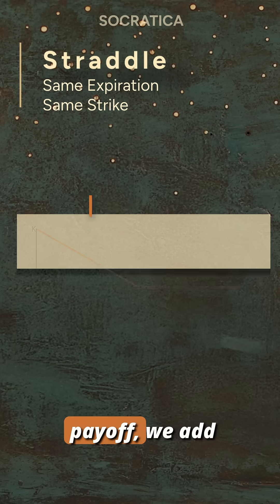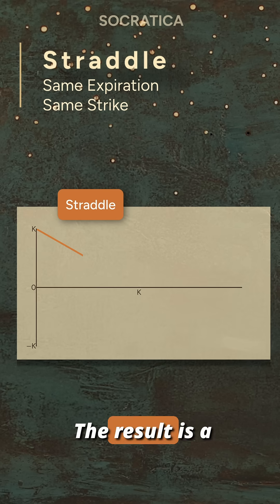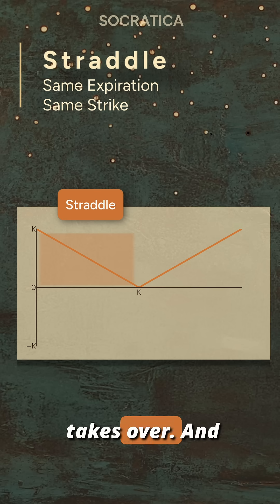To get the straddle's payoff, we add them together. The result is a V-shaped diagram. If the stock moves up, the call takes over. If the stock moves down, the put takes over.